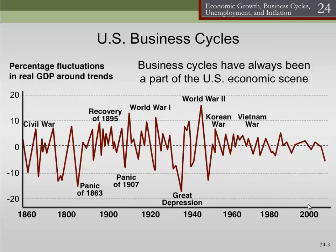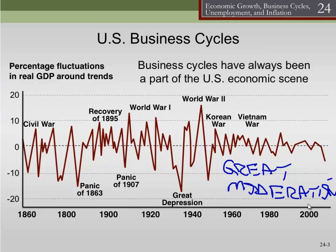One thing we see is that business cycles seem to be less severe — that goes to this idea called the Great Moderation. This graph really shows why we think there was a Great Moderation, because you can see how much narrower these business cycles are. The peaks aren't as high, but the troughs aren't as low either. In the pre-war period, there were five instances where we were more than 10% below potential — we never have that post-war. In fact, we're very rarely outside of 5% below potential. We can also see that these are fairly recurrent — they just go back and forth. It's just the economy wiggling.